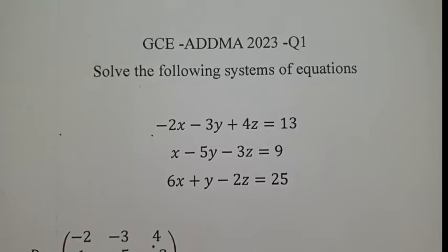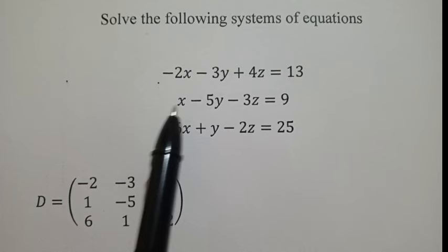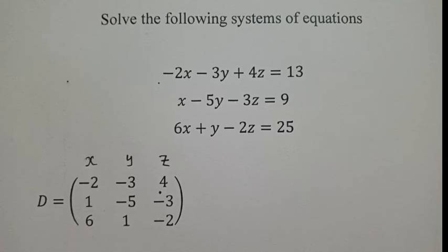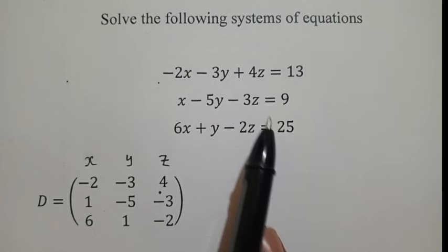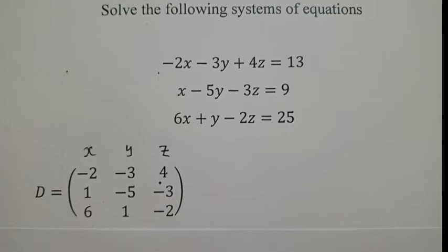So let me show you what I've done. You get the numbers — there's negative 2, 1, and 6. You write them here. These are representing X, these Y, and these Z. Once you come up with this matrix, you now find the determinant of that matrix.